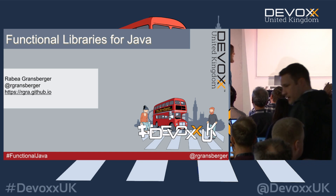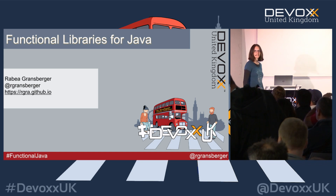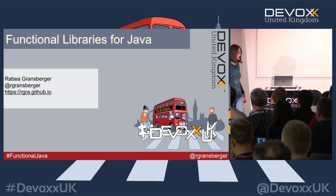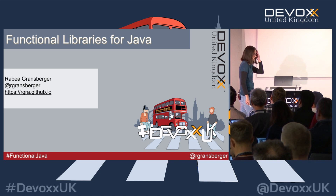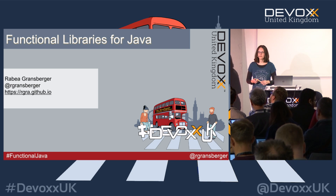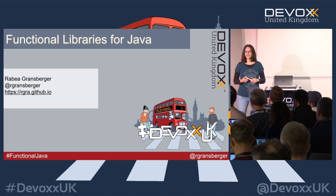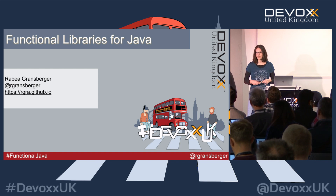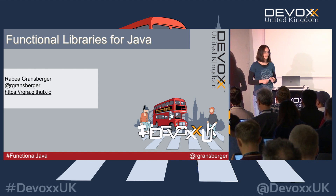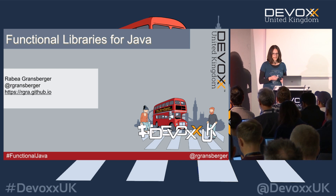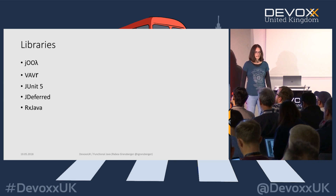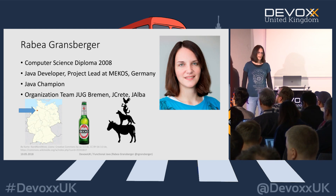Thanks for coming to my talk. Today we're going to have a look at a couple of libraries which you can use for doing functional-style programming in Java. We don't have a functional programming language in Java, and there are other languages on the JVM which are purely functional, but there are still some things we can do. This is the list of libraries we're going to look at.